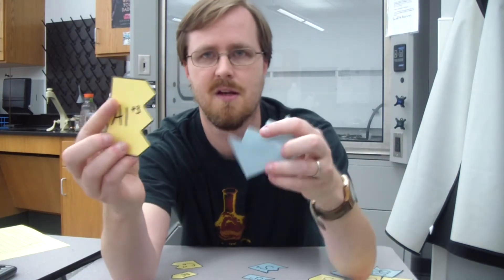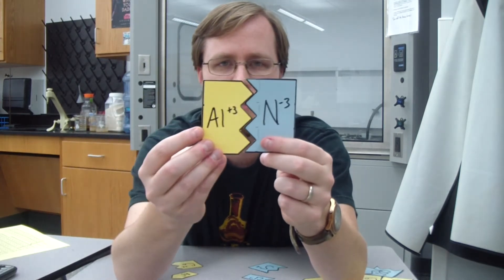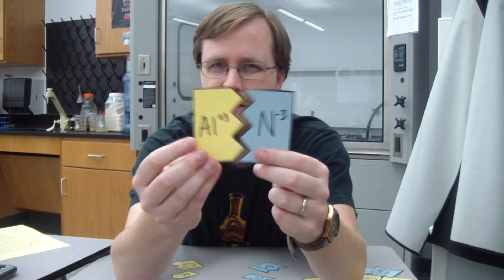Same thing for like cobalt here which is plus 2 and sulfur which is negative 2. They already match up. They add up to 0, just 1 of each. Same thing if you get something that's a plus 3 like aluminum here or negative 3 like nitrogen. They add up to 0, so you just need 1 of each.